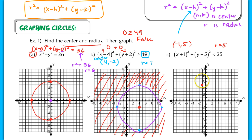Graph center at (negative 1, positive 5). Go up 5 units, down 5 units, right 5 units, and left 5 units — landing at negative 6. This time, I will have a dashed circle because it's a less than symbol.